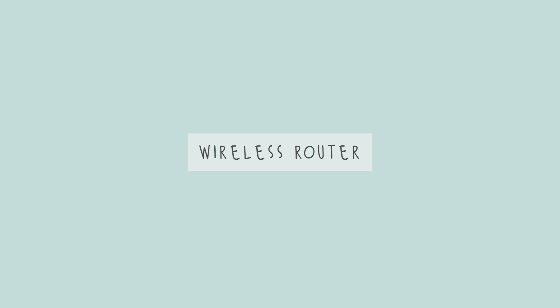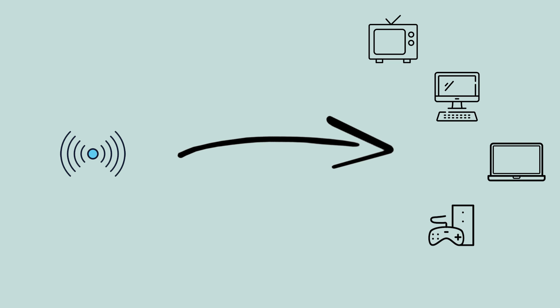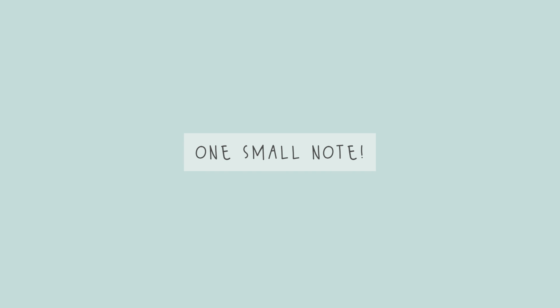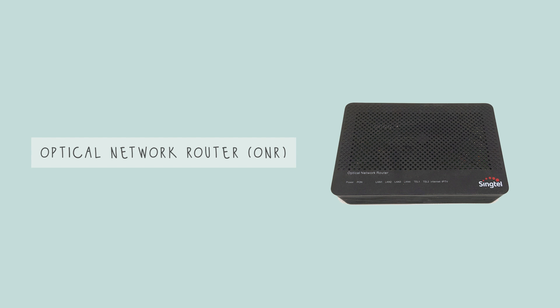Next is the router — specifically wireless routers, because a majority of people think of routers as wireless routers, and it looks something like this. What it does is take the data provided by the ONT and forward it to different devices connected to it, either wirelessly via Wi-Fi or by physical ethernet cables or LAN cables. One small note: some companies opted for optical network routers or ONRs, which are a combination of ONTs and routers, instead of providing them as two separate devices. You can consider them as a router in this video.